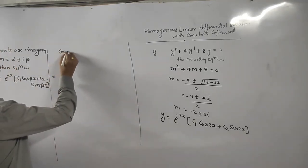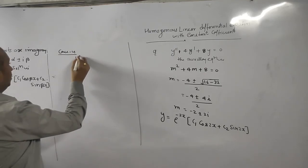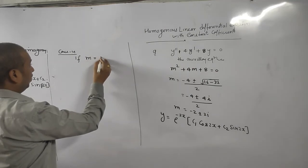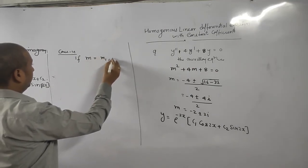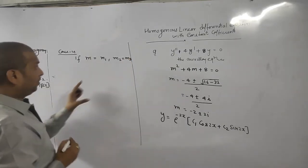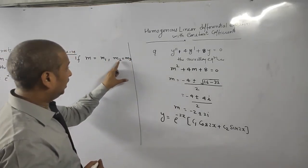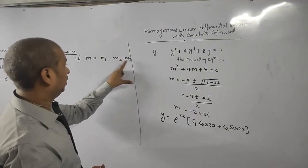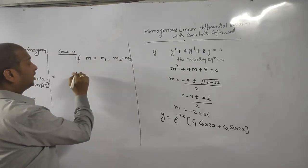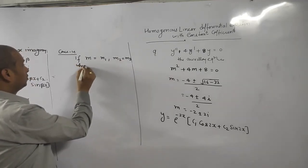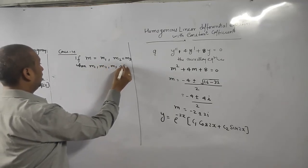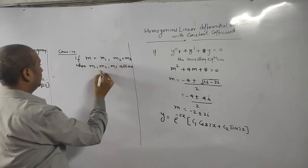Case fourth. If m value we got, one is m1 and second m2 is equal to m3. Means one root is different and remaining two roots are equal. And where m1, m2, m3 all are real value.